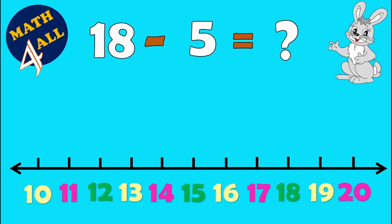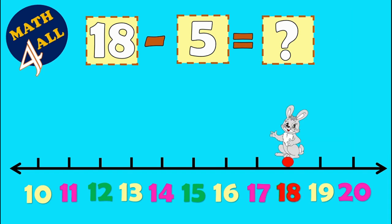Okay, let's move on to the next problem. Oh, 18 minus 5 equals what. Again, first step: stop on the biggest number, on 18. 18 minus 5 means you will jump backward 5 jumps: 1, 2, 3, 4, and 5.